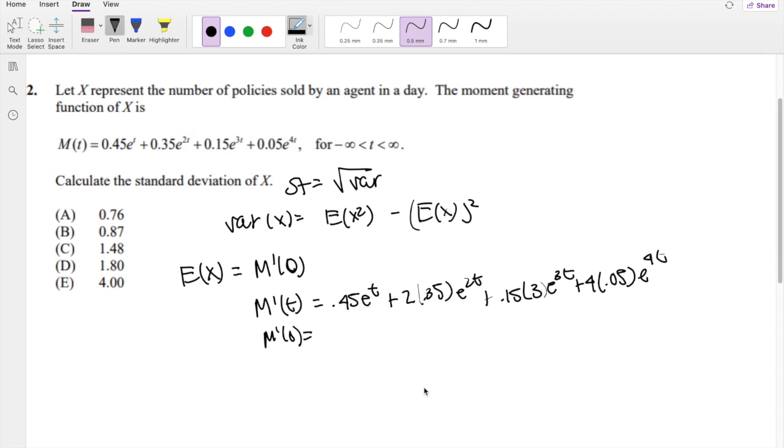Every e^t just goes to 1. So this is 0.45 plus 0.7 plus 0.45 plus 0.2, which is equal to 1.8. Alright, let's find the second moment.